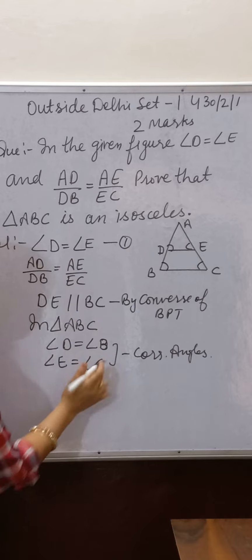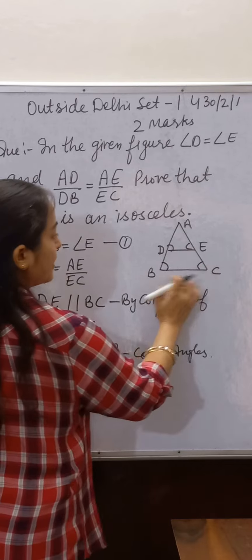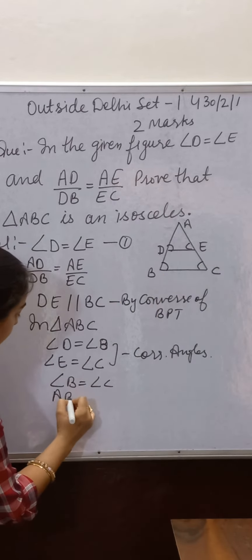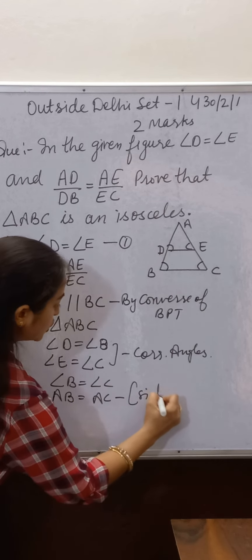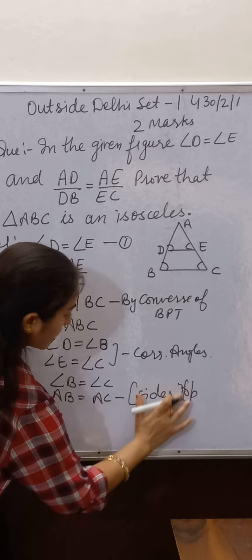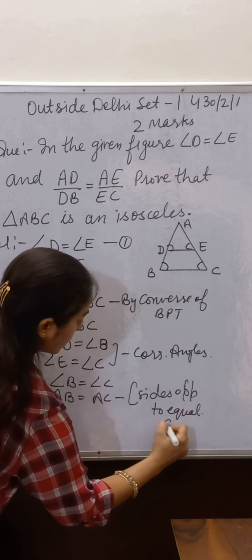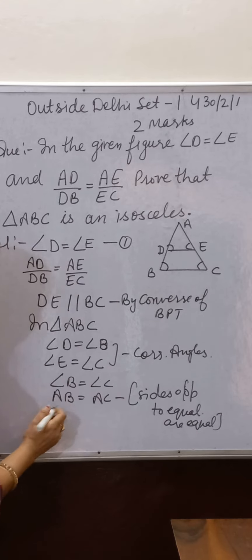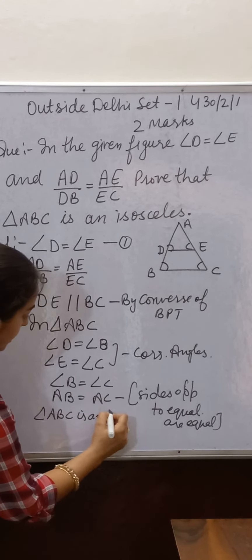Since angle D equals angle E, we have angle B equal to angle C. If angle B equals angle C, then side AB equals side AC, because sides opposite to equal angles are equal. Therefore, triangle ABC is an isosceles triangle.